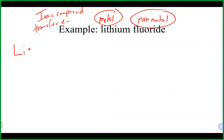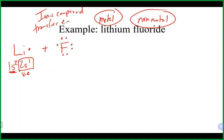Lithium is group one, so it has one valence electron — its electron configuration is 1s2, 2s1. The one valence electron is in the 2s orbital; the 1s2 electrons are core electrons. Fluorine is group seven, so it has seven valence electrons. Its electron configuration is 1s2, 2s2, 2p5 — both the 2s and 2p orbitals are on the second energy level, giving seven valence electrons.